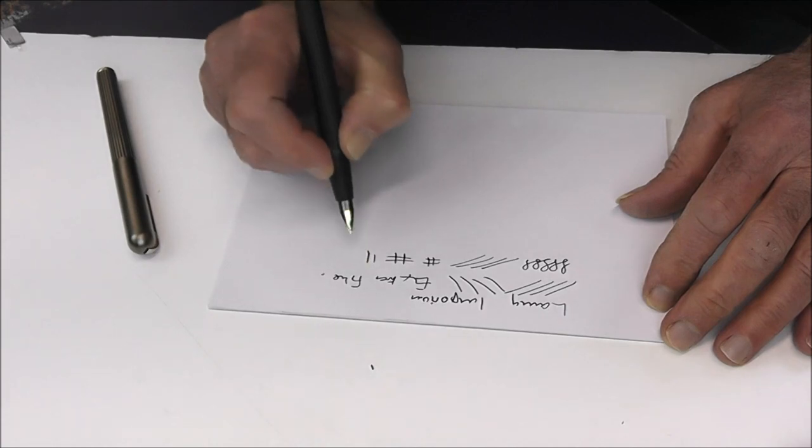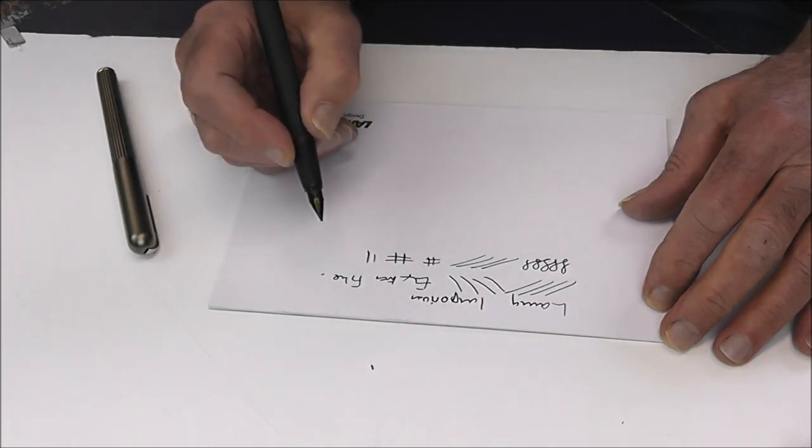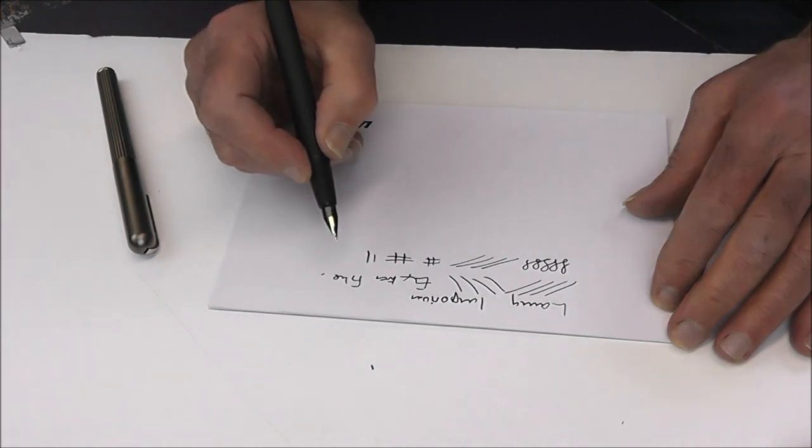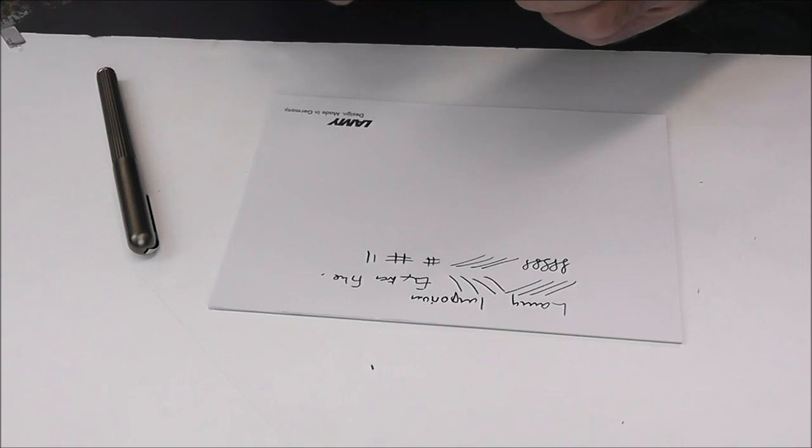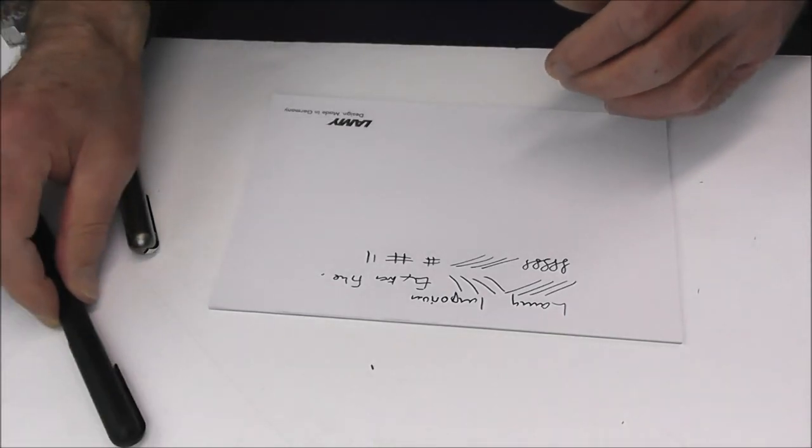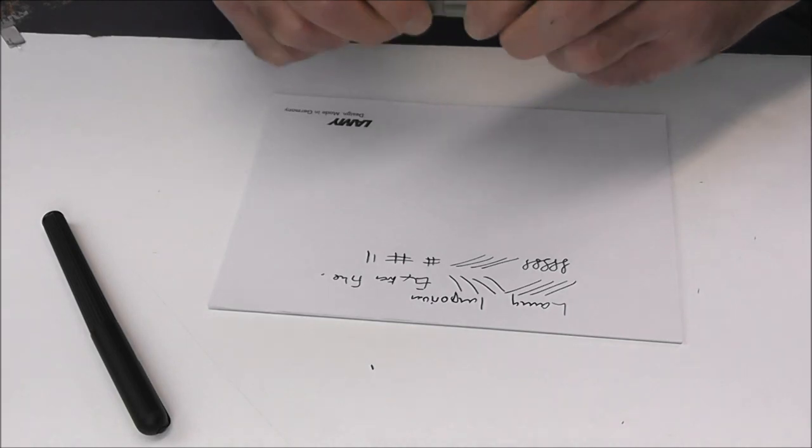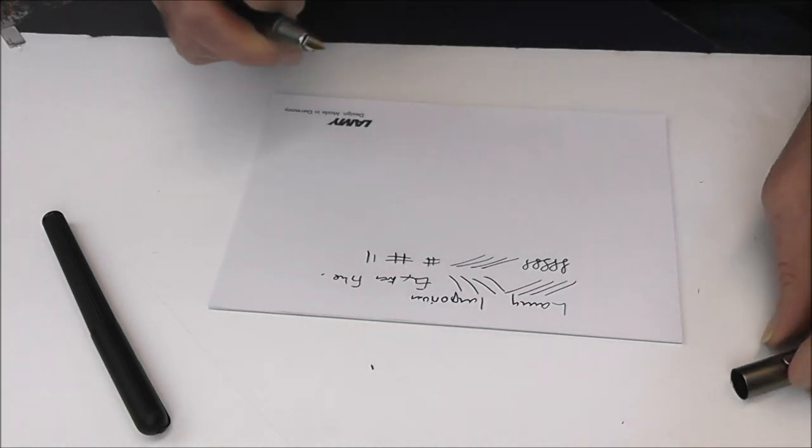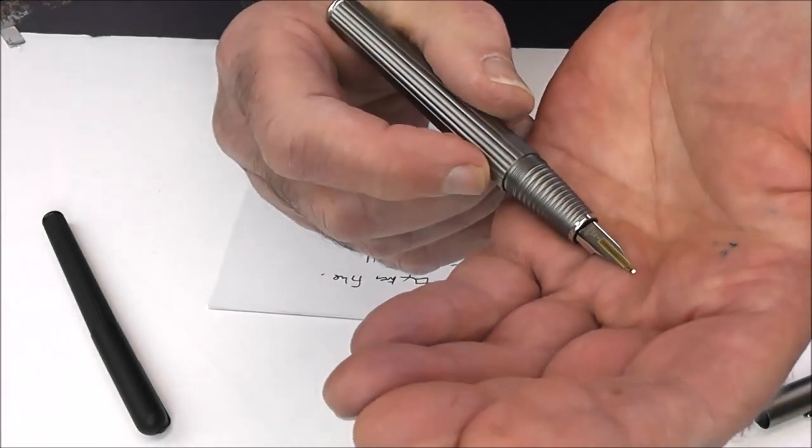So there is a little bit of softness there, which might be surprising for a Lamy nib. We're going to take a look now at this one, which is broad. Now the other nib sizes that are available are fine and medium—this one's broad.